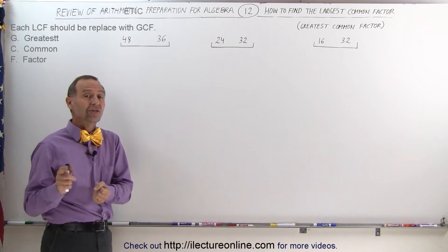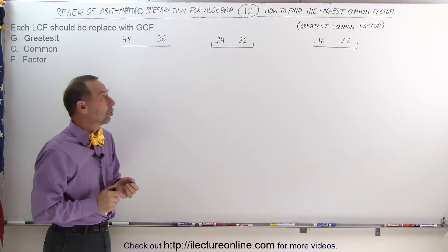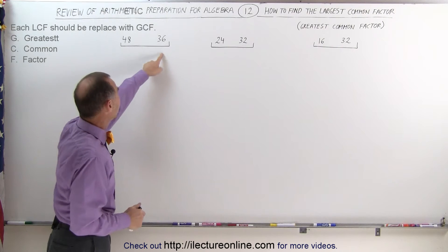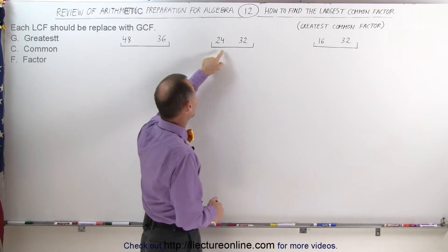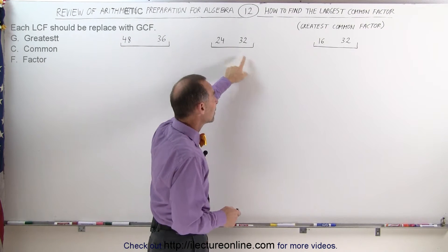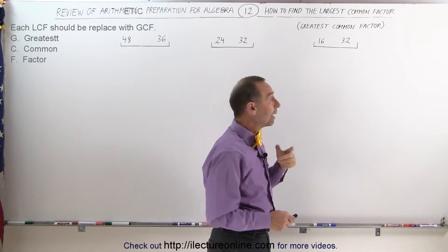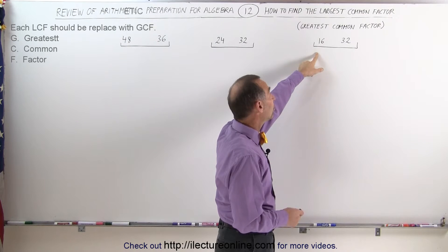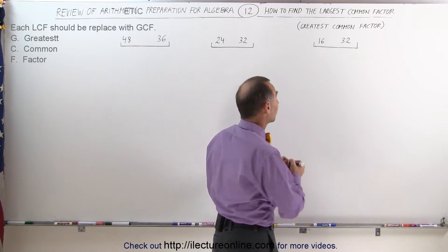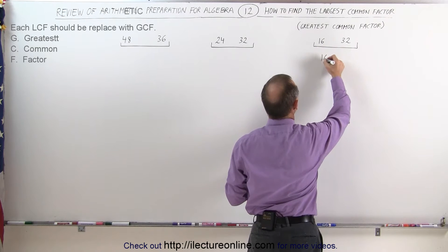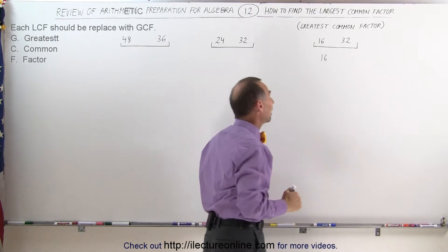The first thing you should do is see if the smaller of the two numbers fits evenly into the larger number. For example, does 36 fit into 48? In this case it doesn't. How about 24 — does it fit into 32? Not evenly. But we can see that 16 fits into 32, which means that 16 would be the largest common factor of these two numbers. 16 is the answer because it fits into 32 evenly exactly two times.